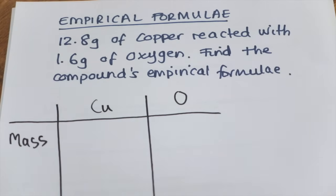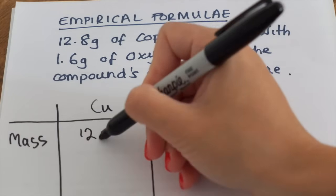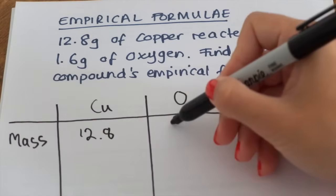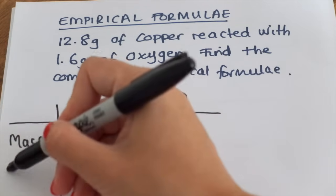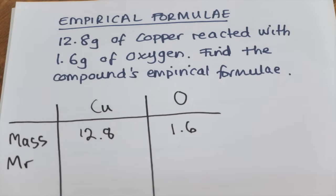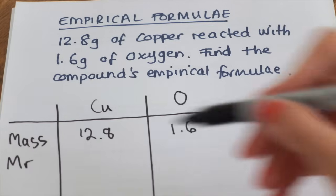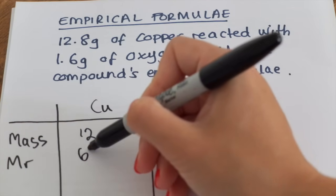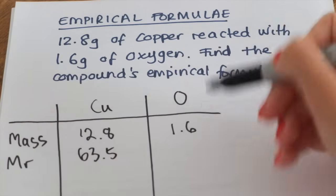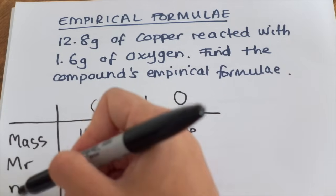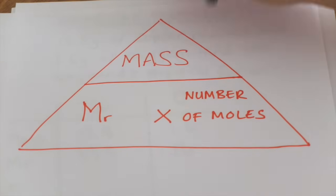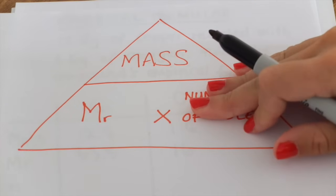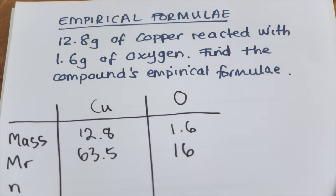The mass is given in the question: we have 12.8 grams of copper and 1.6 grams of oxygen. Now we're going to work out the Mr using the periodic table — copper has a relative atomic mass of 63.5 and oxygen has 16. Then we're going to work out the number of moles by dividing the mass by the Mr.